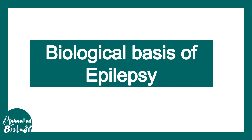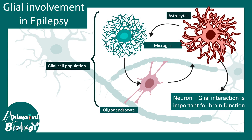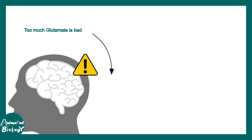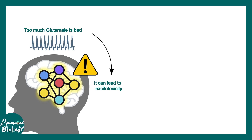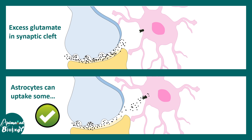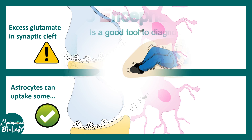Excitatory-inhibitory imbalance is a key cause of epilepsy. In a neuronal circuit there are not only neurons but also glial populations such as astrocytes and oligodendrocytes. Astrocytes are very important in the context of epilepsy because too much glutamate in an excitatory circuit is bad — it can lead to excitotoxicity and death of neurons. Astrocytes reuptake much of the glutamate present in the synaptic cleft, thereby preventing the excitotoxic effects of glutamate in the circuit.